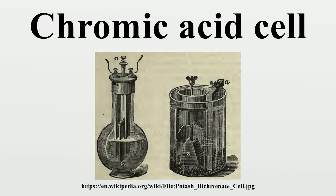Fuller cell. The cell was set up in a glass, or glazed earthenware, pot. This contained the chromic acid solution, the carbon plate, and a porous pot. Inside the porous pot was dilute sulfuric acid, the zinc rod, and a small quantity of mercury. The mercury formed an amalgam with the zinc, and this reduced local action — i.e., unwanted dissolution of the zinc when the cell was not in use.